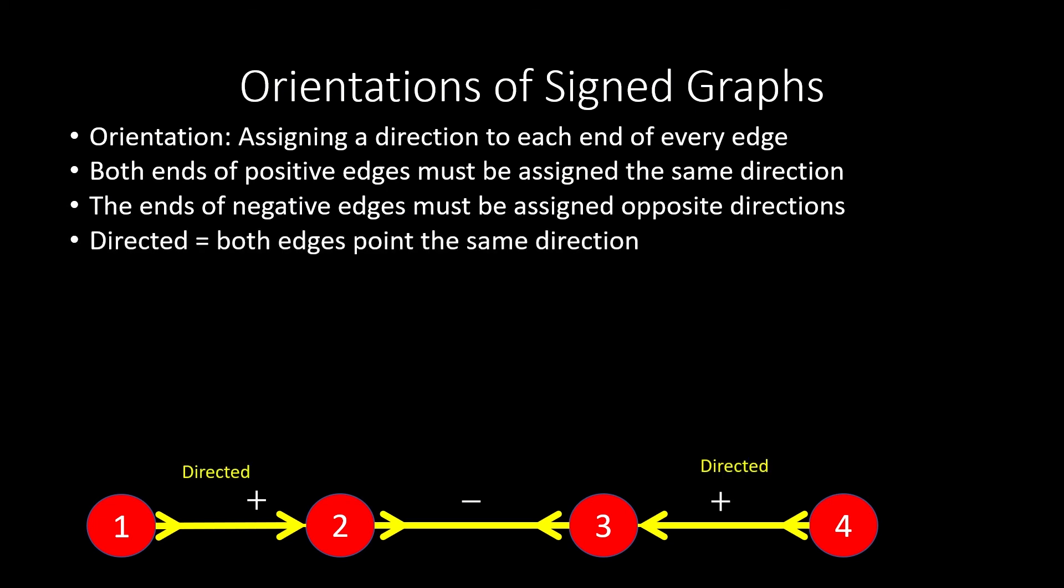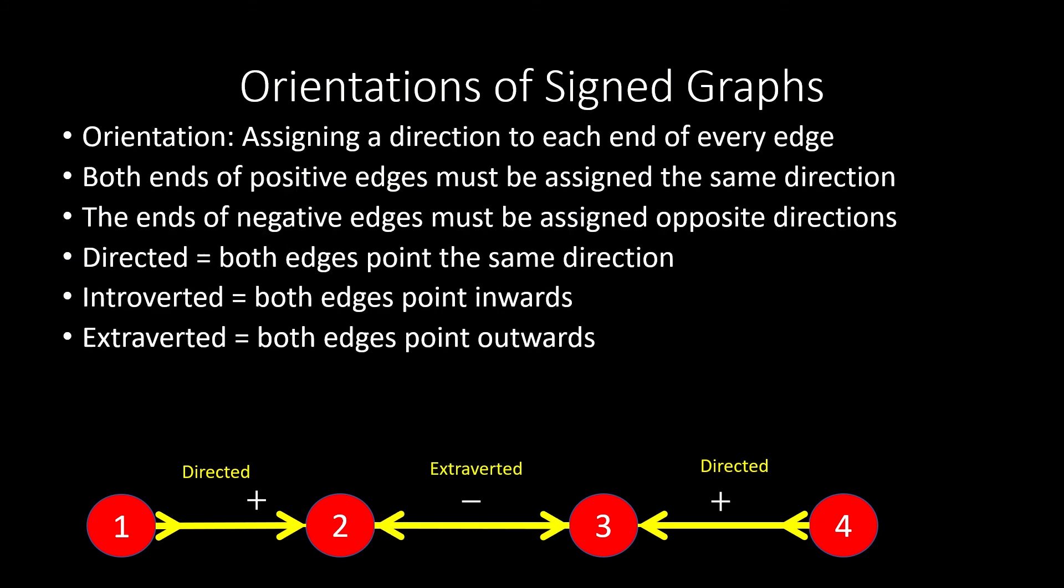When the two ends of an edge point in the same direction, as with oriented positive edges in a signed graph, we call that edge directed. And when they point inwards in opposite directions, we call that edge introverted. These are the orientations that we're allowed to assign to positive or negative edges in a signed graph. Positive edges always directed, and negative edges always introverted or extroverted.